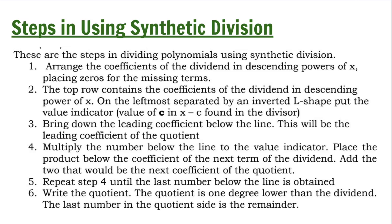These are the steps in dividing polynomials using synthetic division. Step 1: Arrange the coefficients of the dividend in descending powers of x, placing zeros for the missing terms. The top row contains the coefficients of the dividend in descending power of x. Step 2: On the leftmost, separated by an inverted L shape, put the value indicator. Step 3: Bring down the leading coefficient below the line. This will be the leading coefficient of the quotient.